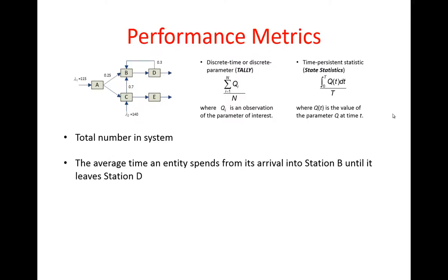The second metric that we're interested in is the average time that an entity spends from its arrival into station B until it leaves station D. So we're interested in the time that entities spend in this particular subsystem of our model. Again, this is not something that is automatically reported by Simio.